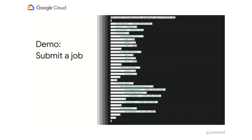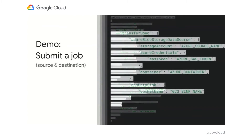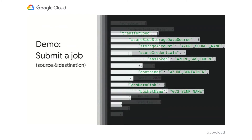Here's an example of how you might use our REST interface to submit a new transfer job. Let's zoom into pieces of this so we can understand what information you're sending along. Starting with information about the source and destination: you would supply information about your Azure Blob Storage account, container, and credentials so we can access your source data. In addition, you would supply information about the destination GCS bucket where you want your data to go.